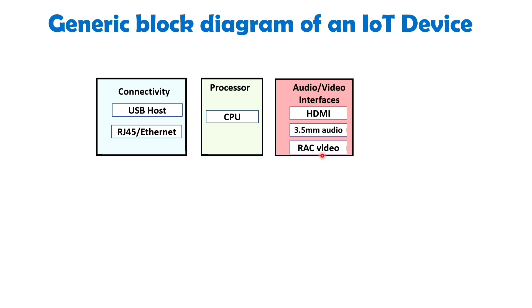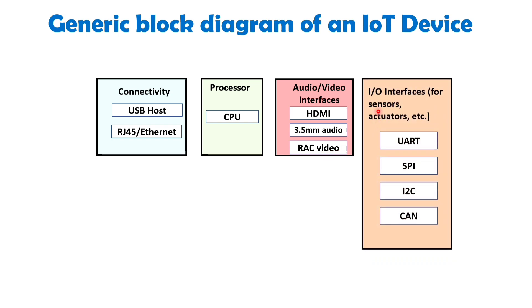Next are input-output interfaces. Input-output interfaces including UART, SPI, CAN and others are utilized to establish communication between sensors, actuators and the IoT system. These interfaces enable the exchange of signals, facilitating the input and output of data to and from the sensors and actuators. This enables the IoT system to interact with the physical environment and respond to stimuli.